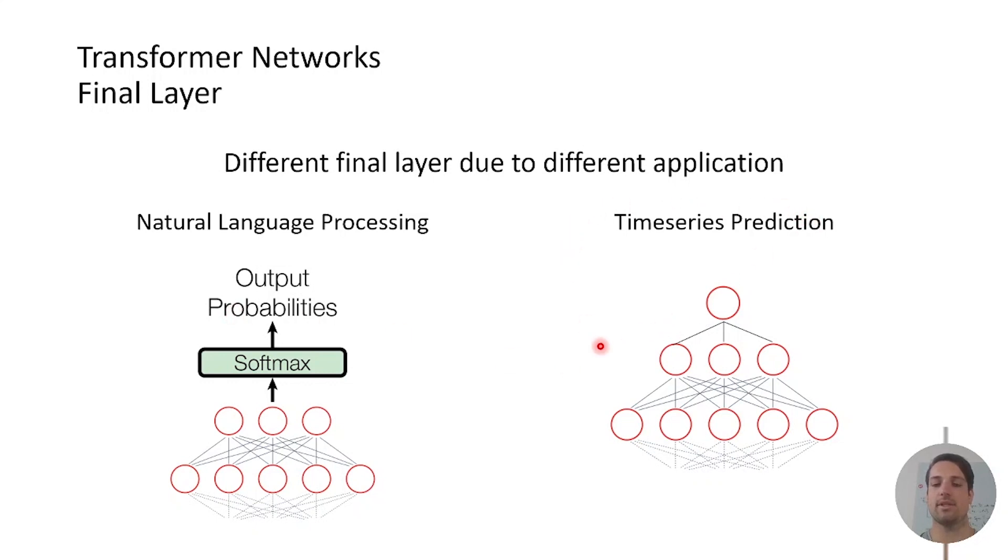For time series prediction it is a bit easier because we don't need a softmax function because we actually want to predict numerical values so we can choose the dimensionality as high as we want. If we only want to do a univariate prediction we only use a one-dimensional output vector which gives us the next scalar output of the target sequence.